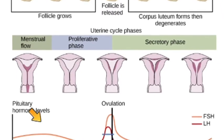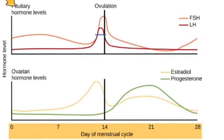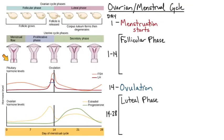The other two graphs show hormone levels — pituitary hormones and ovarian hormones. It's helpful to think of hormones as chemical messengers. They're a way for the pituitary gland, the uterus, and the ovaries to communicate back and forth and let each other know where they are in the process.